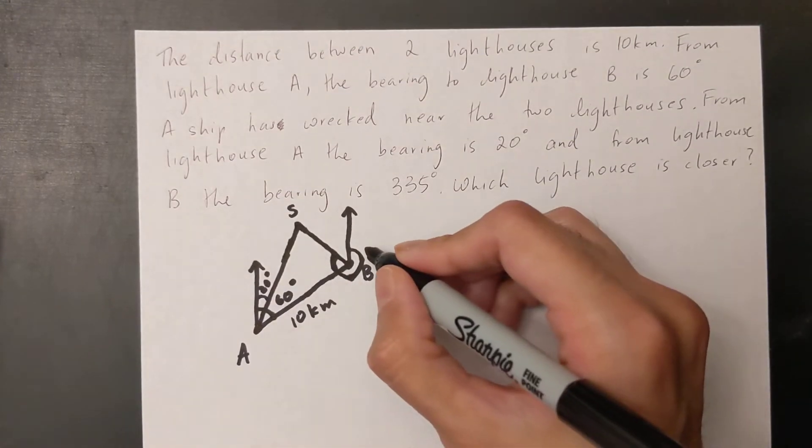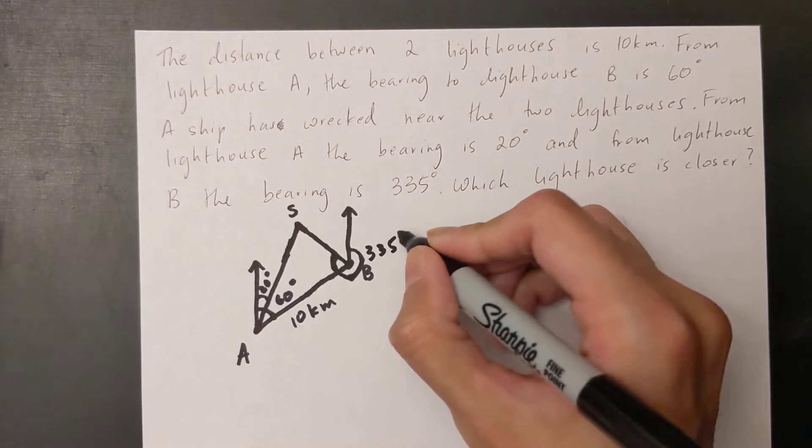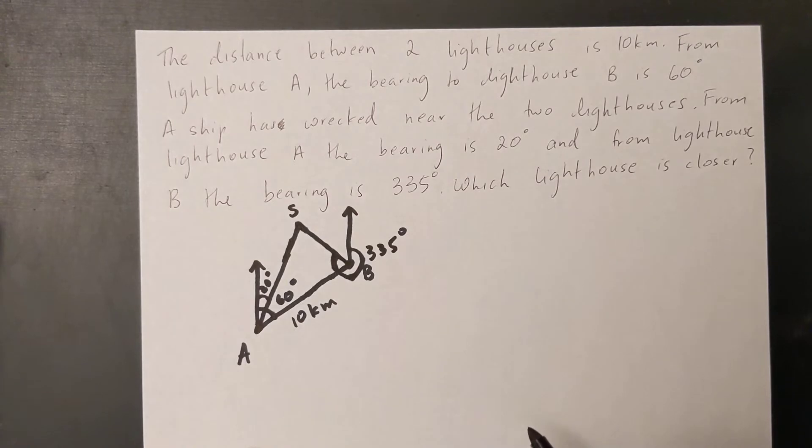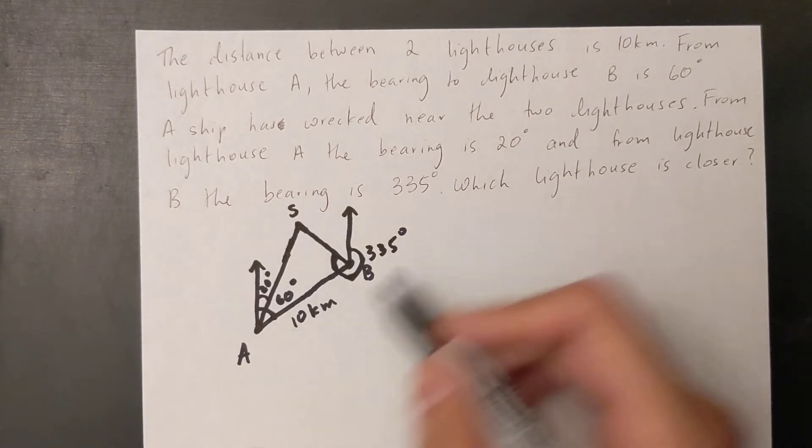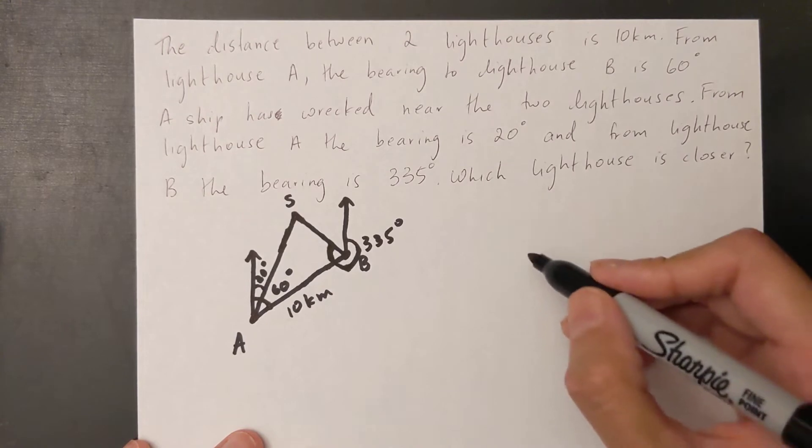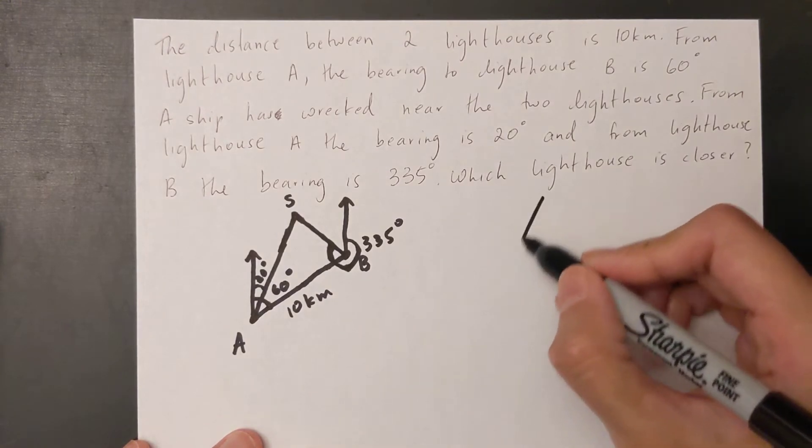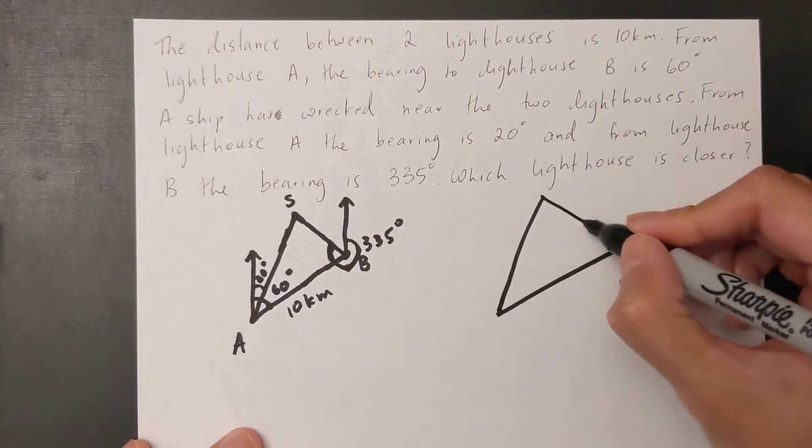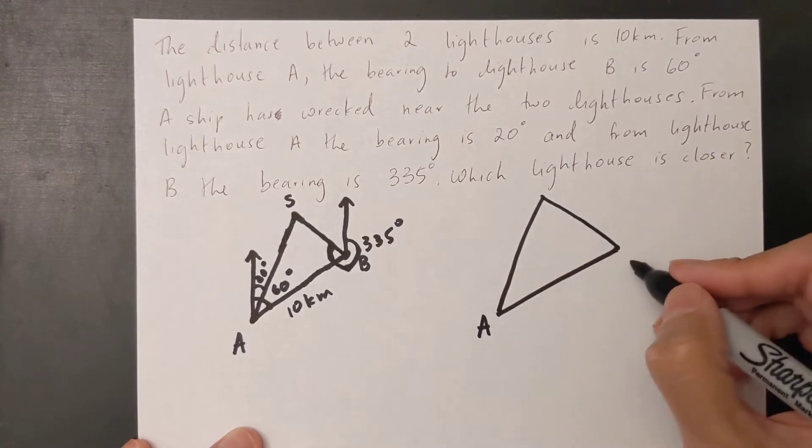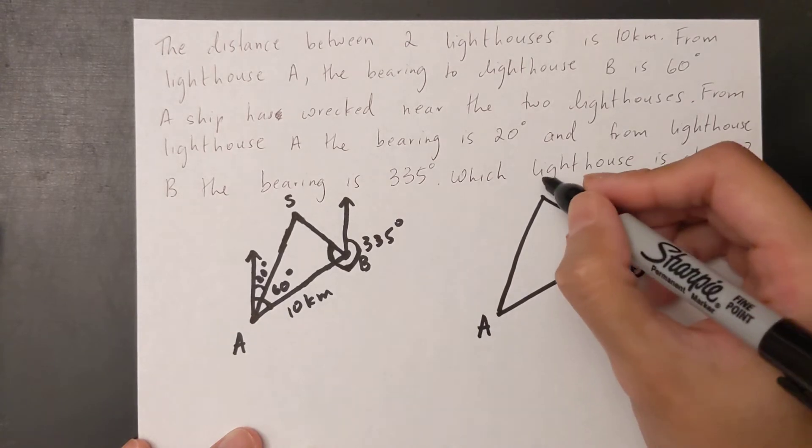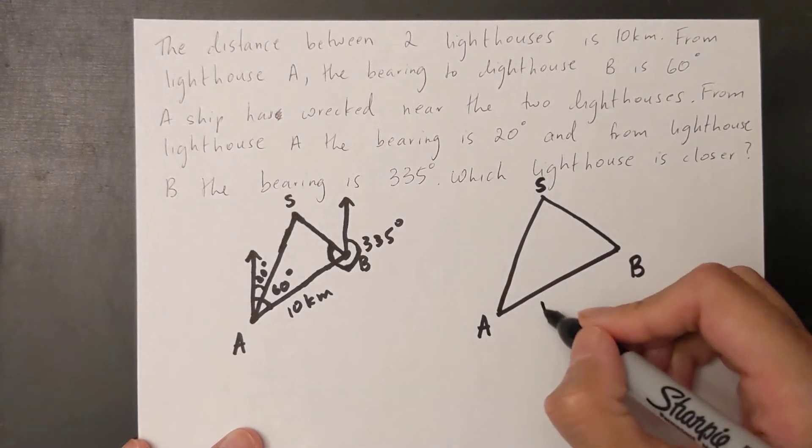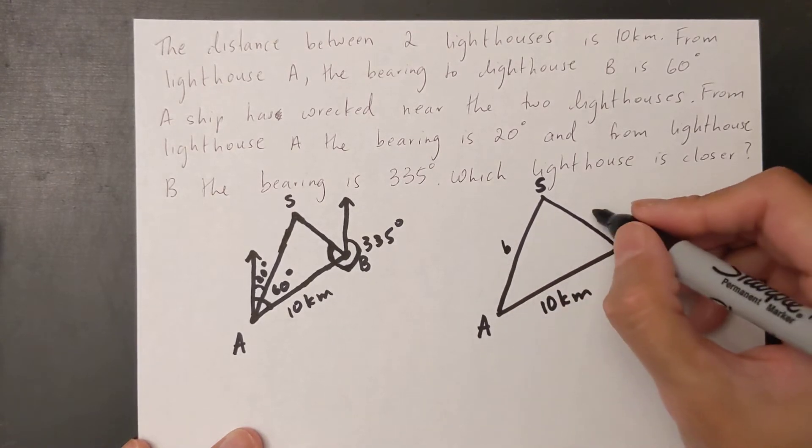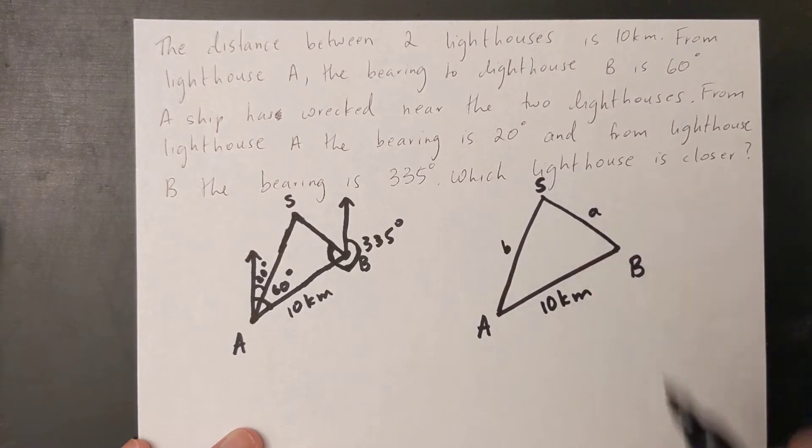Okay, so now that I have this I know that this is 335 degrees. The question is asking me which lighthouse is closer, is A or B closer to the ship. So I'm going to redraw this with just a triangle because it's always neater and a bit easier to do that. A, B, and S. I know this is 10 kilometers and I know I need to find small b and small a and see which one is closer to the ship.